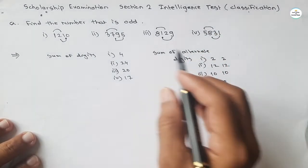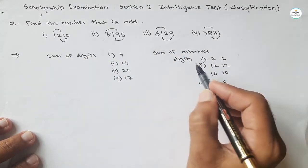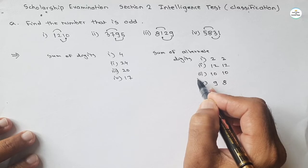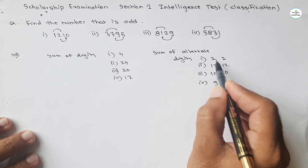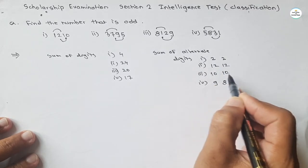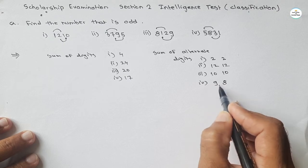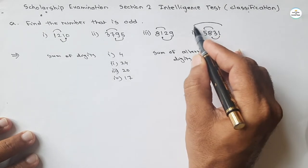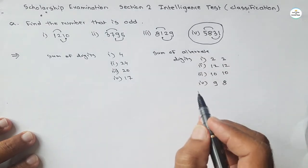So if we take the summation of alternate digits, we find that first three numbers show some relation. It means sum is equal. Here also 2, 2, 12, 12, 10, 10. But for the last number, sum is different. Means this number is odd number. Are you getting? And also remember,